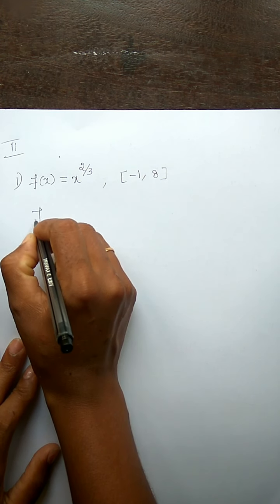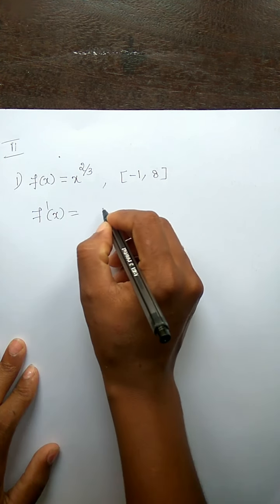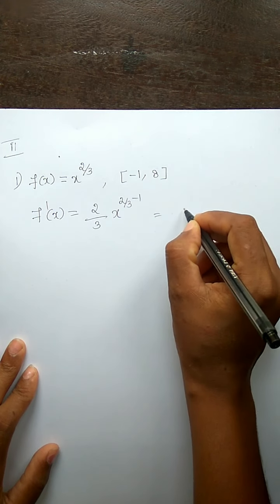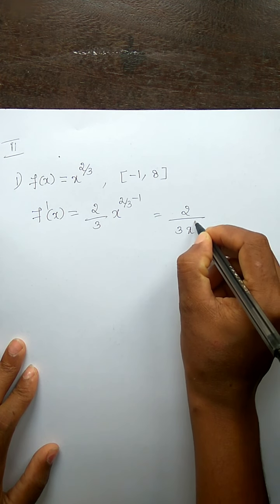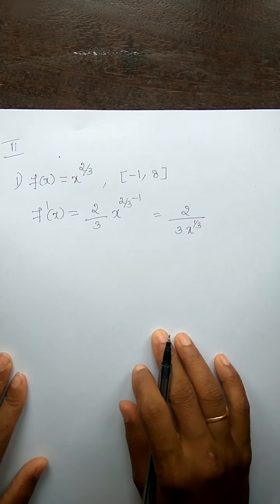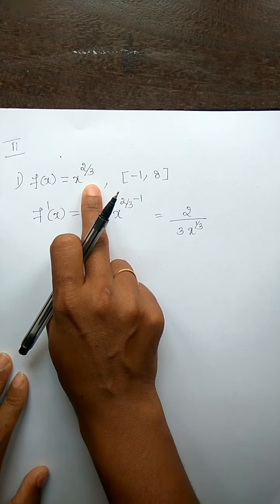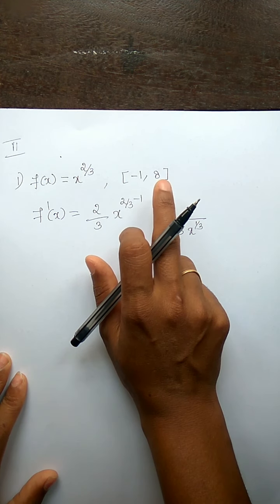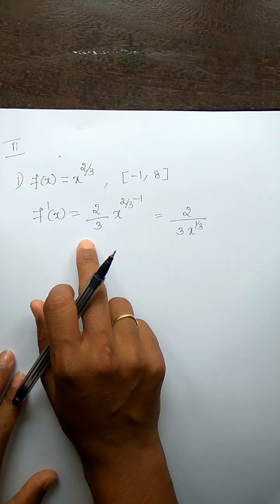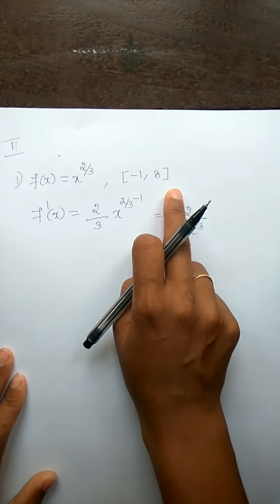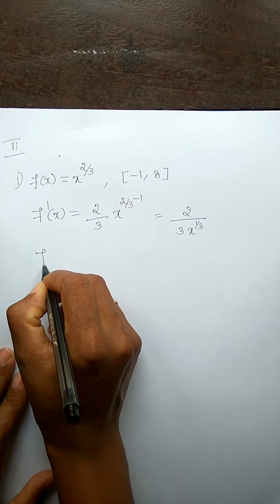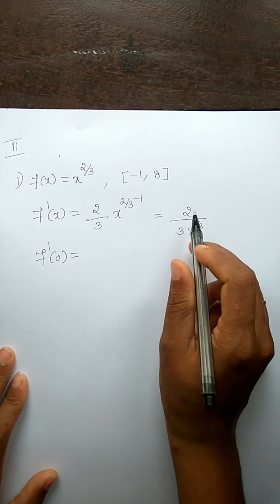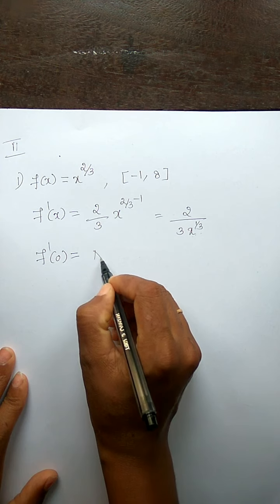First, find f'(x). f'(x) = (2/3) · x^(2/3 - 1), which equals (2/3) · x^(-1/3). Now, observe that f(x) = x^(2/3) is continuous over the closed interval [-1, 8]. Now, what about the differentiability? This interval includes 0 also. Consider f'(0) — as the denominator contains the x term, if x is 0, this is not defined.